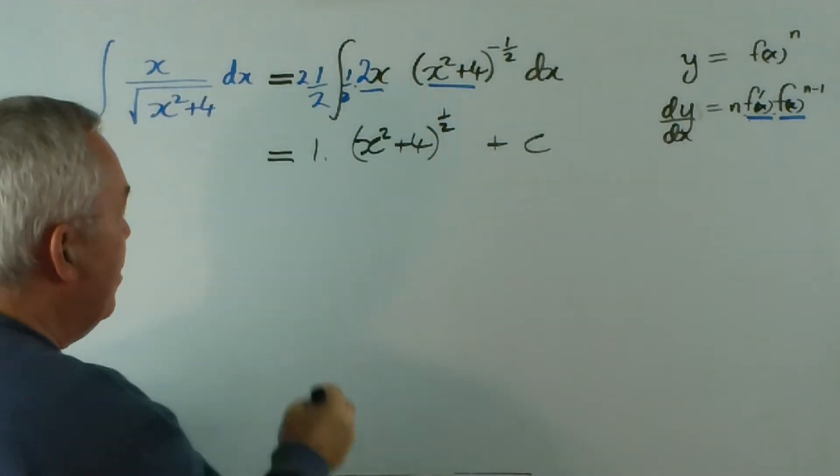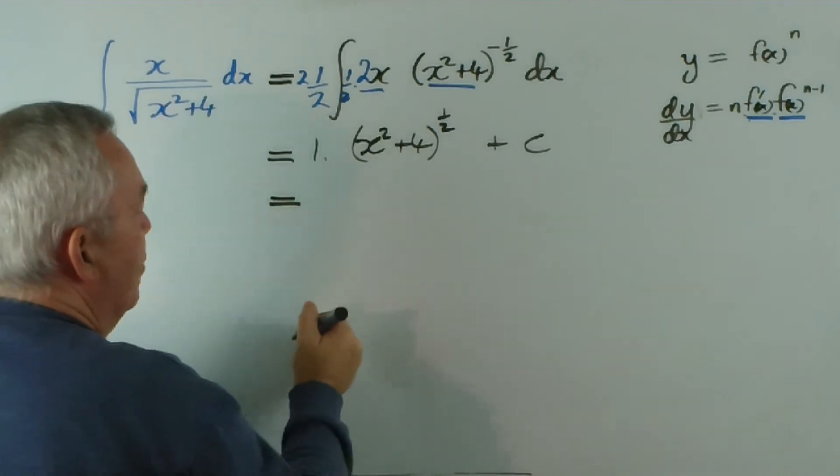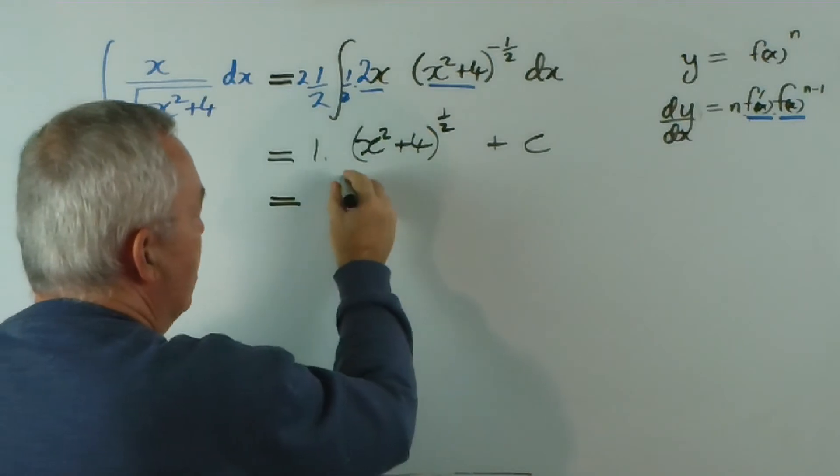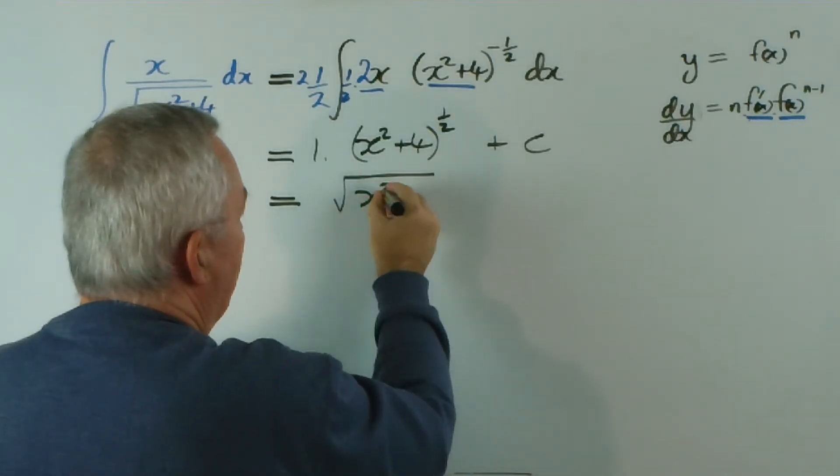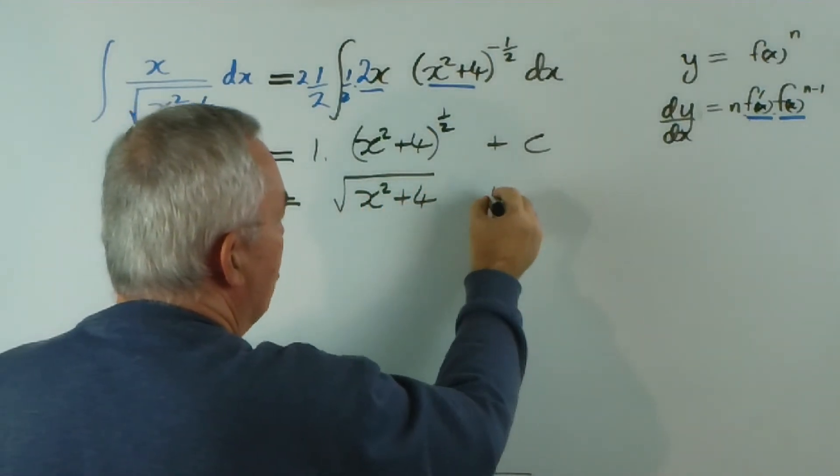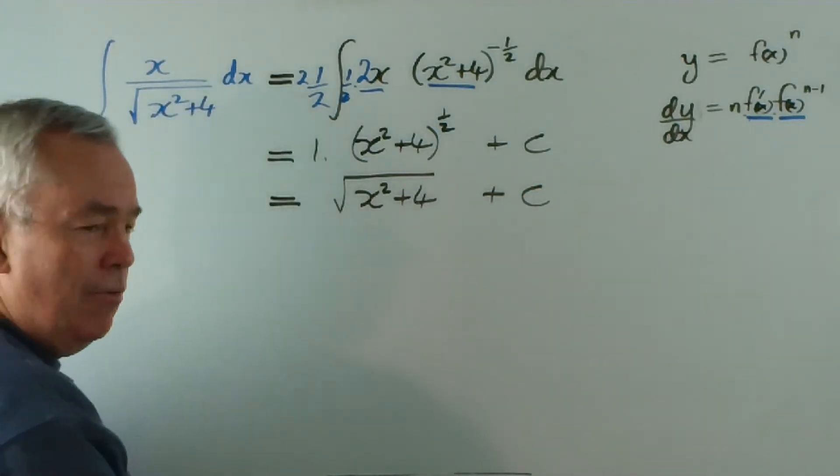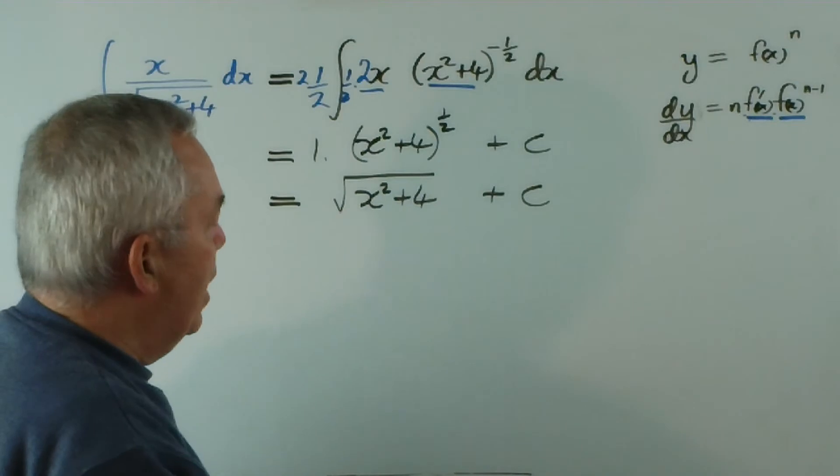If we wish, certainly we won't write 1 times that, and we would put this back into radical form. Why? Because it was presented to us in that form, and that would be our solution.